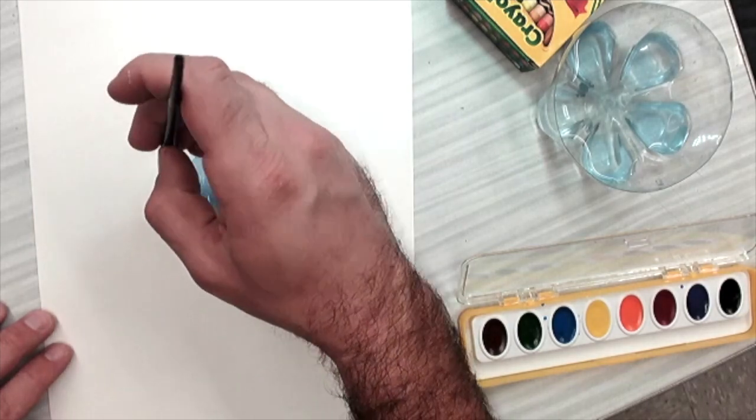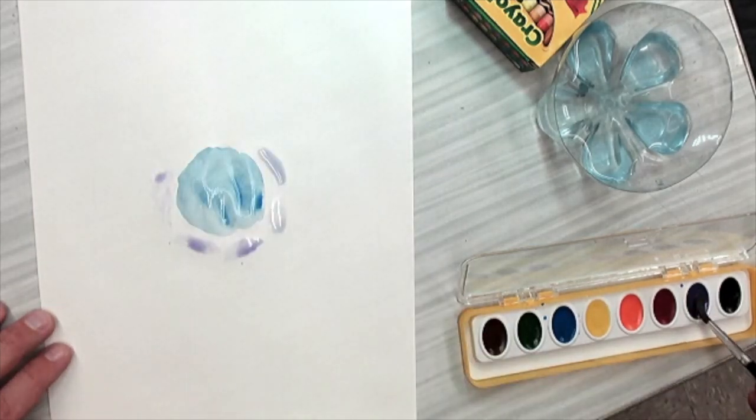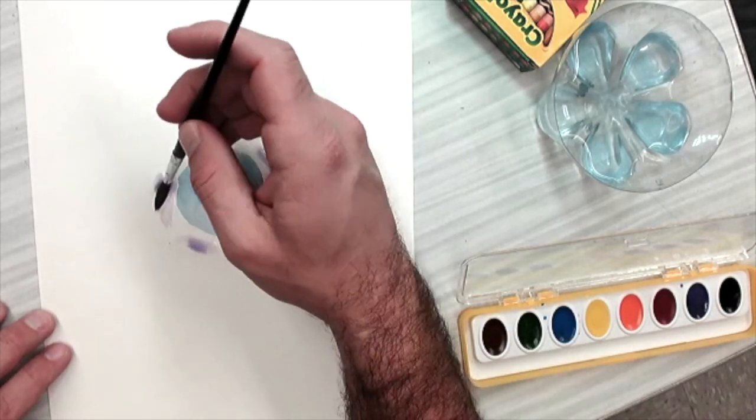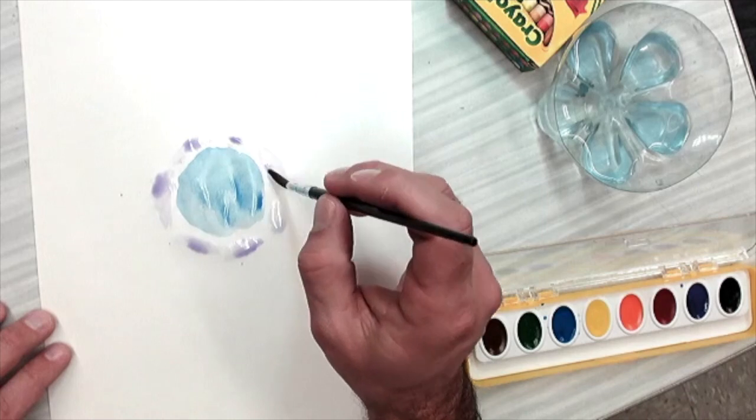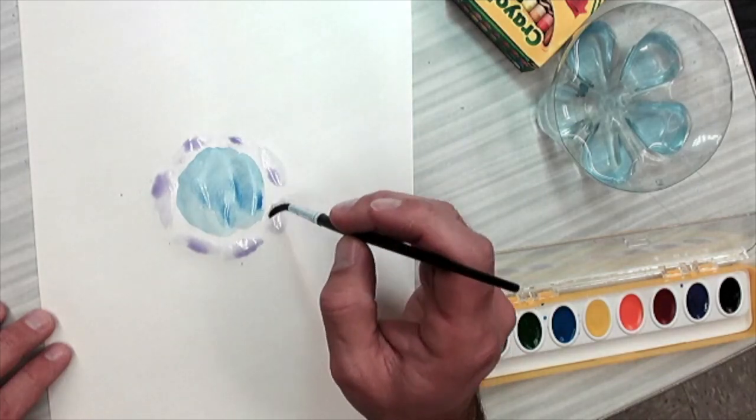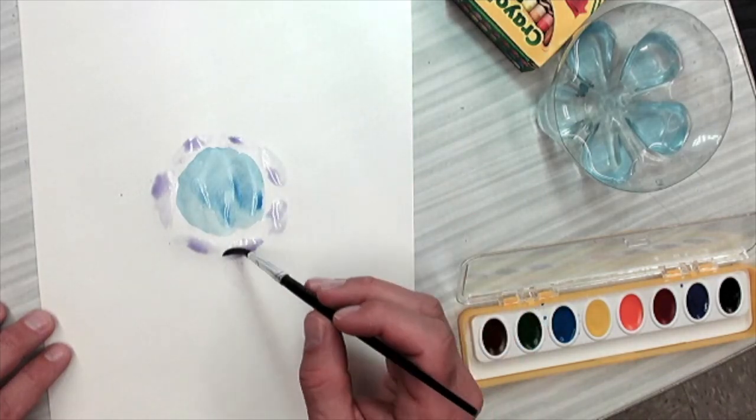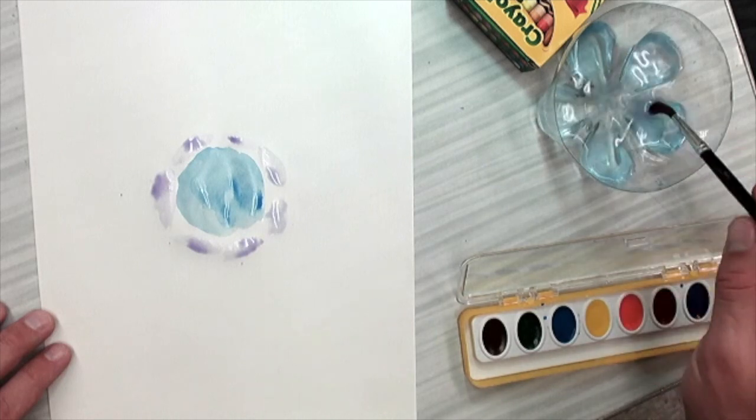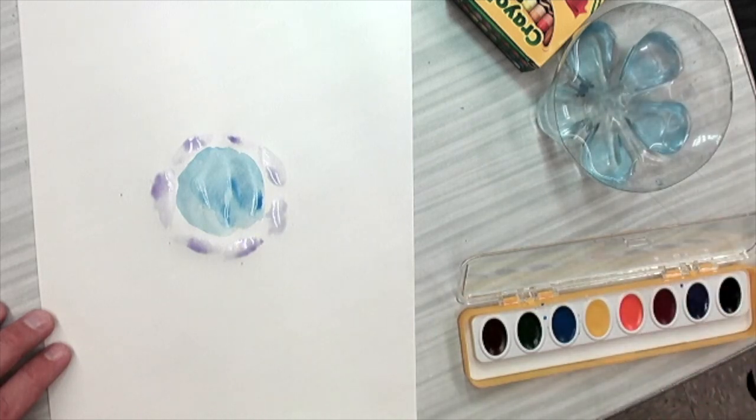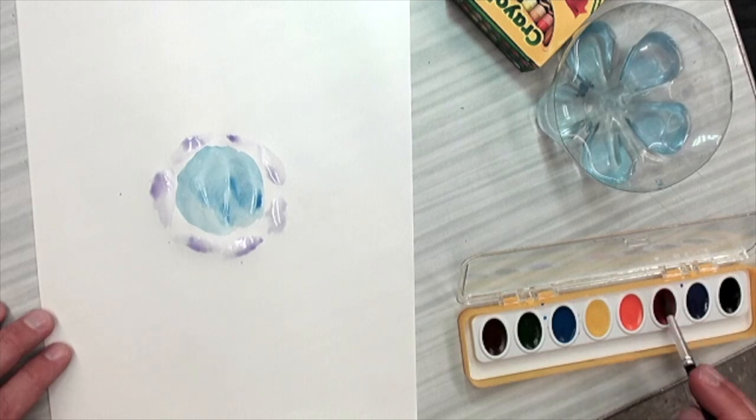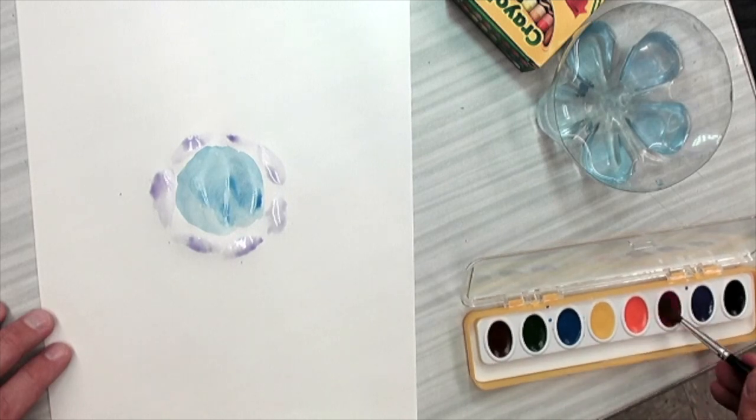And you keep going around the outside of that first shape that you did. It can touch that color, or you could leave a little bit of white in between. It doesn't really matter. It depends on how you want it to look. The next thing I'm going to do is I'm going to go to my next color. So I'm going to think about what color goes next to purple. So I already did blue. Now I'm going to go to red.